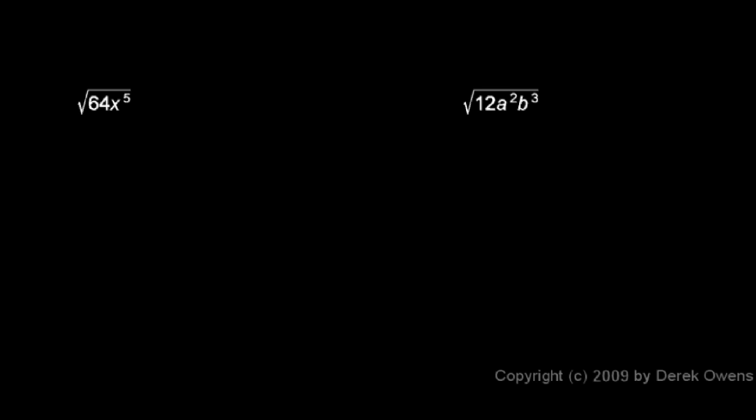The square root of 64 times x to the fifth. The 64 is 8 squared, so I can see that 64 right there under the radical — the square root of 64 is equal to 8. So that's equivalent to an 8 outside the radical.